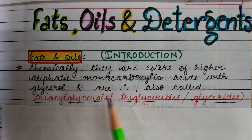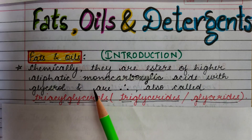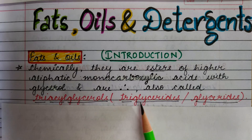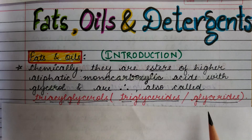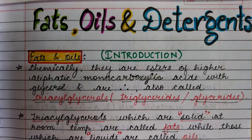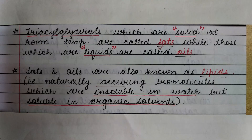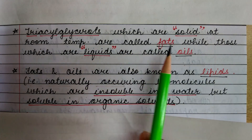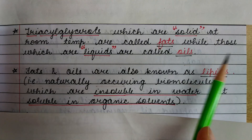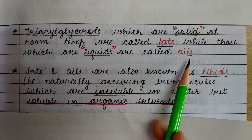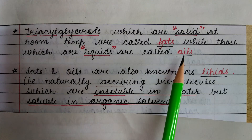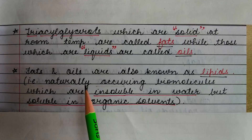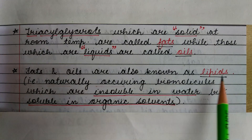Fats and oils are also called triacylglycerols, or triglycerides, or simply glycerides. The triacylglycerols which are solid at room temperature are called fats, while those which are liquid are called oils. This can also be regarded as a difference between fats and oils. Fats and oils are also known as lipids.